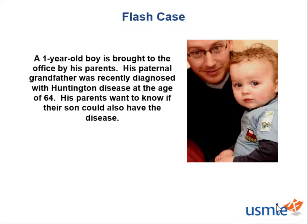Let's get back to the parents of this kid. If the kid's paternal grandfather was diagnosed with Huntington's disease, does their son have a chance of having the disease? The mode of inheritance of Huntington's disease is autosomal dominant. So there is a chance that the grandfather passed the dominant gene to his son, and there is a chance that this one-year-old got it from his father. Not only does the one-year-old boy have the possibility of having Huntington's disease, but so does his father.